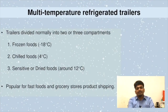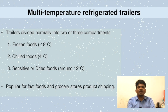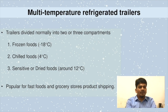Now, multi-temperature reefer trailers — different compartments may be set to different temperatures. The trailer is divided normally into two or three compartments: frozen foods at around minus 18 degrees Celsius, chilled foods at 4 degrees Celsius, and sensitive or dried foods maintained at around 12 degrees Celsius. These are very popular for fast food and grocery store product shipping.